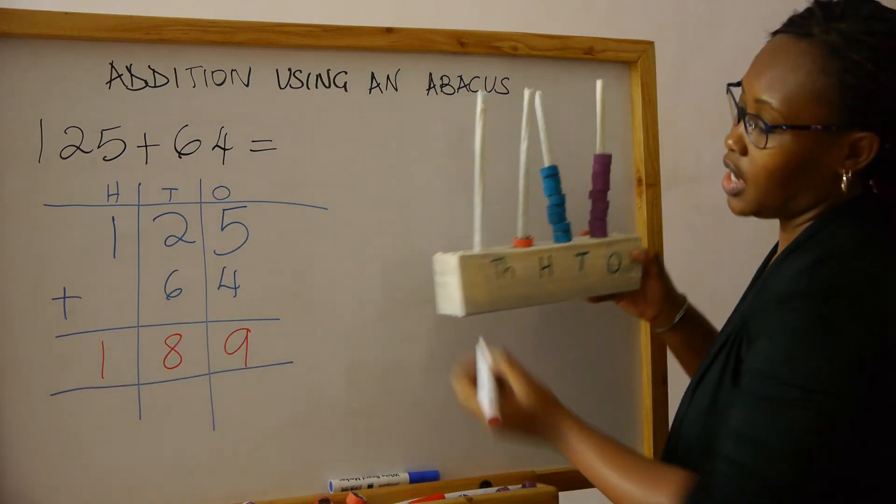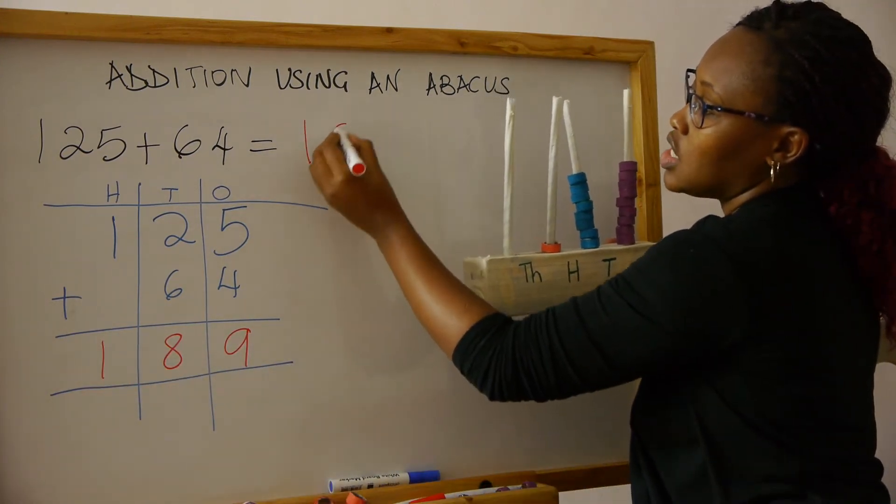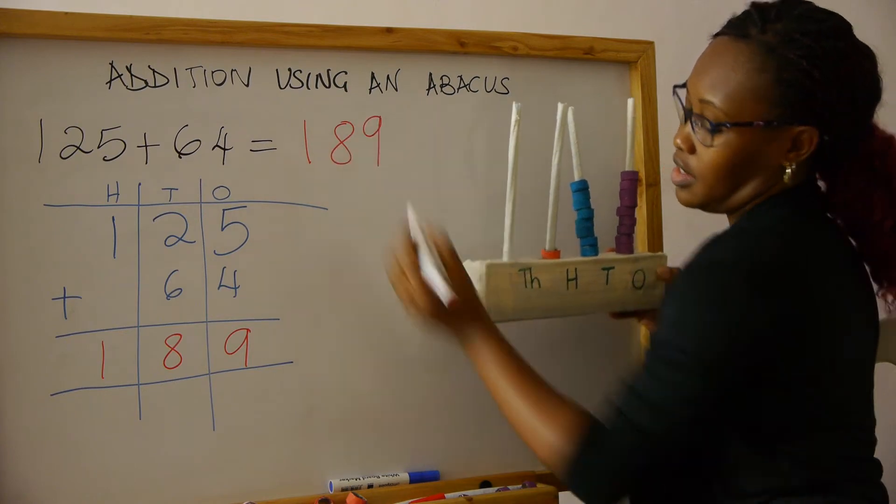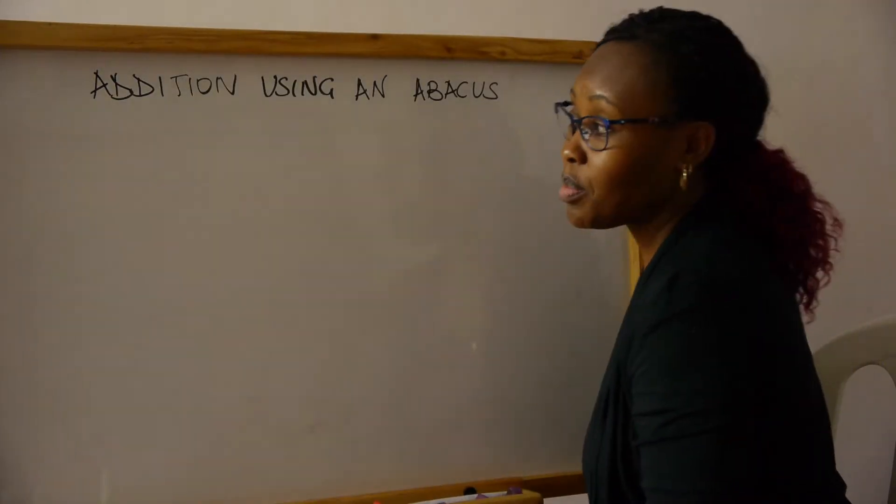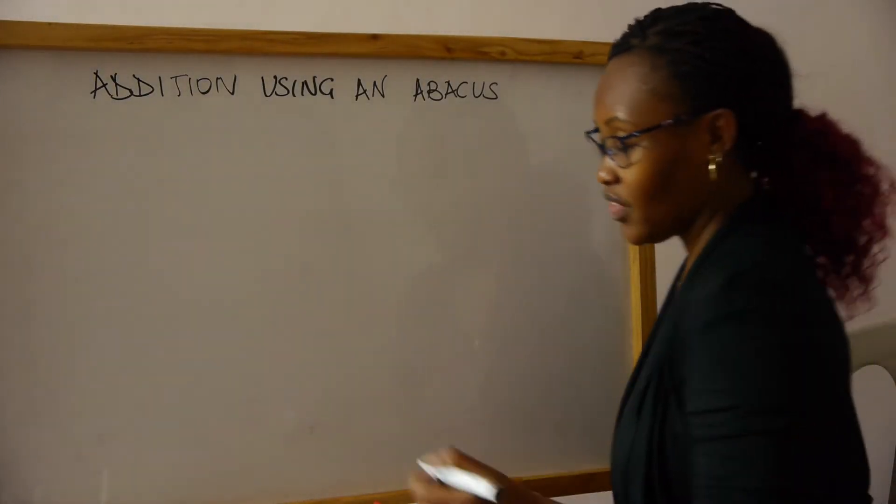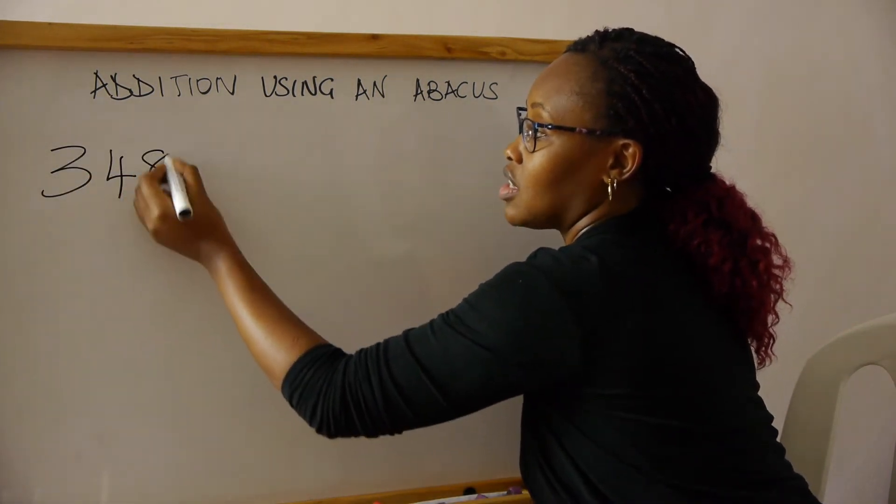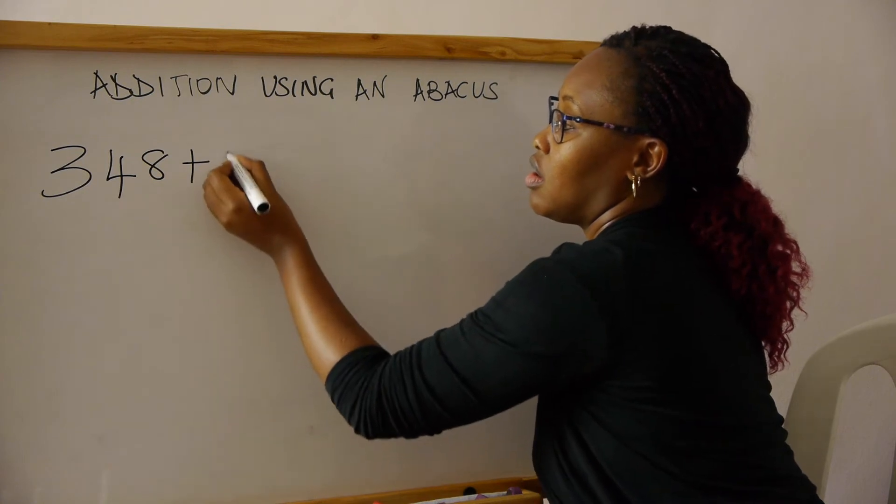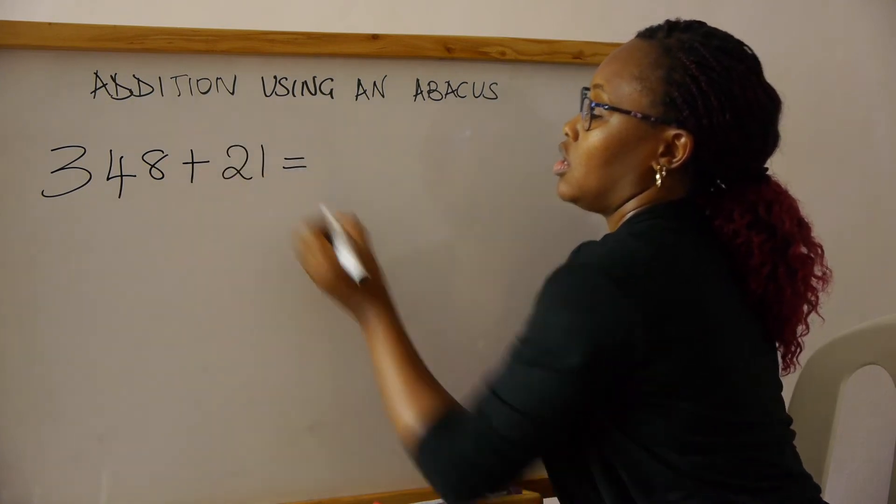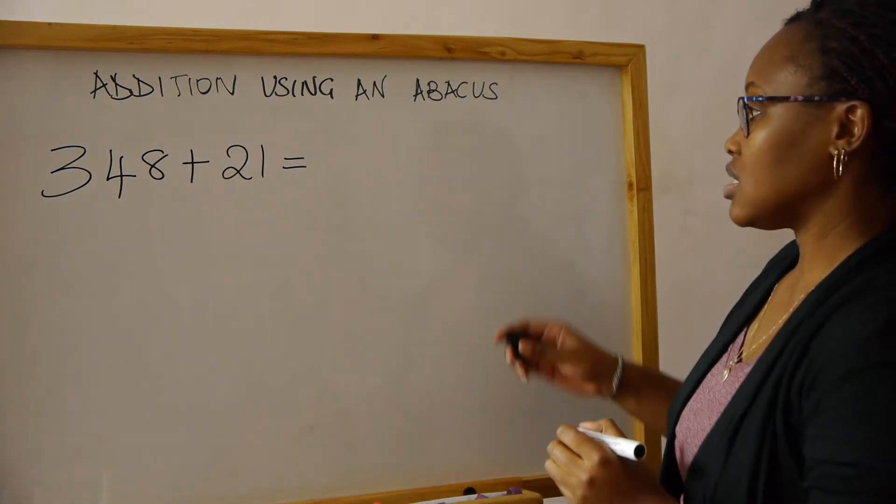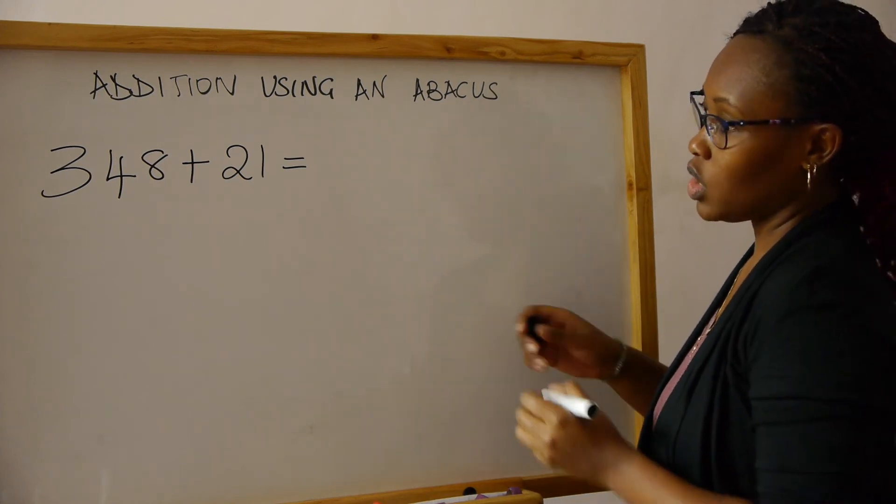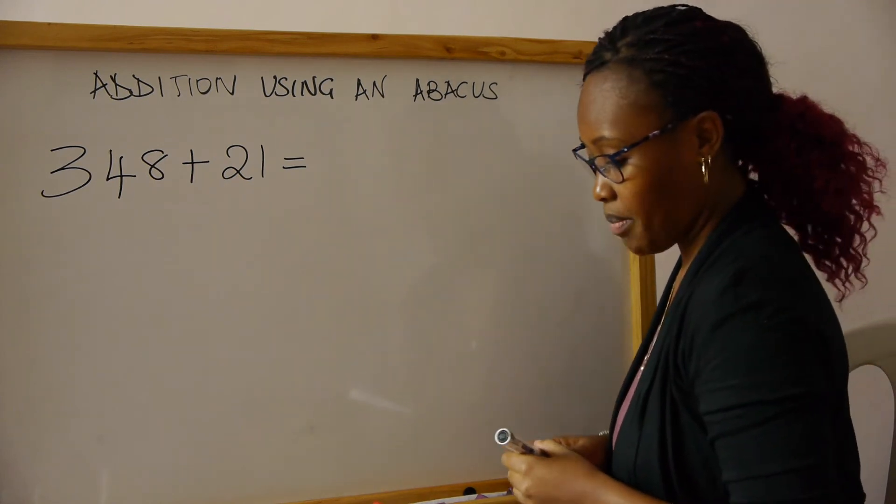So our answer is 189. Let's look at another example. This time you're given a sum and either you don't have an abacus or you've been asked to show it in your book, how you do it without an abacus.